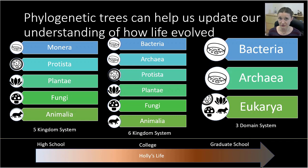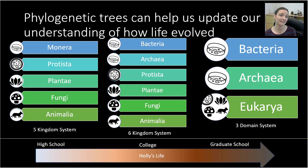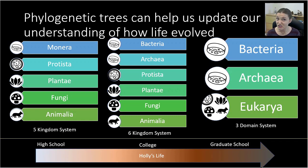Using phylogenetics to understand how organisms are related has caused major shifts in how we talk about taxonomy. When I was in high school I learned the five-kingdom system: Kingdom Monera, Protista, Plantae, Fungi, and Animalia. Later that became six kingdoms when Monera was split into Bacteria and Archaea. Now we have the domain system — three domains broken into kingdoms. This new information from morphological data, genetics, and proteomics helps us reorganize and reestablish relationships between organisms to better reflect their evolutionary history.